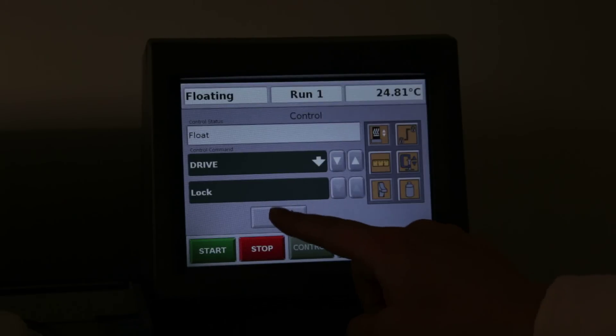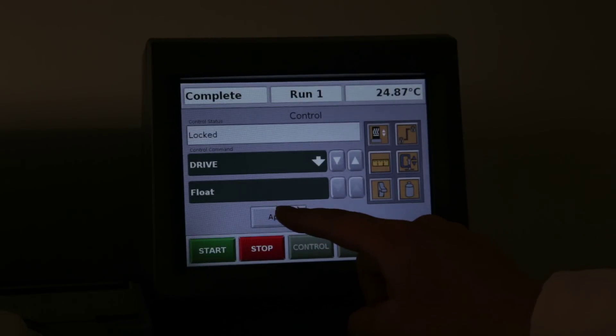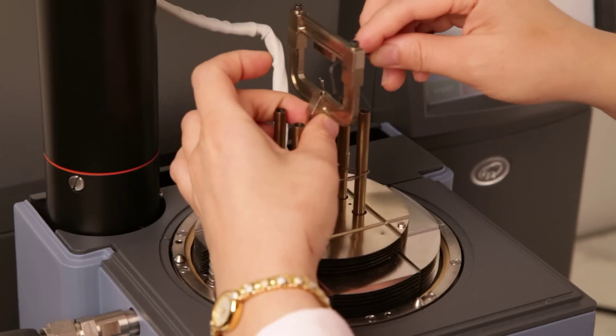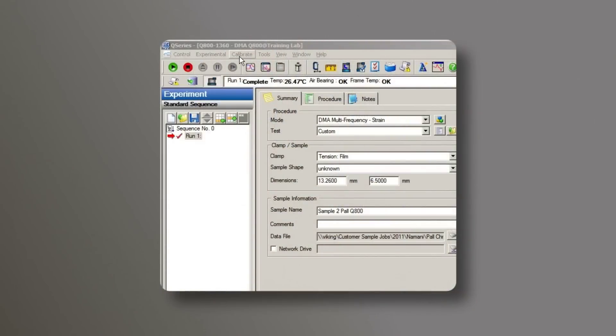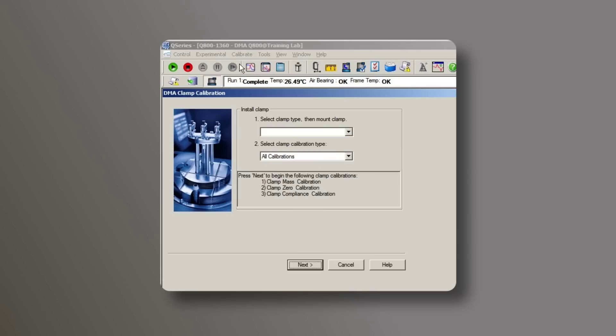Lock the drive shaft from the instrument touch screen. Install the movable clamp to the drive shaft. From the control software, go to calibrate, clamp, choose three-point bending, all calibrations.